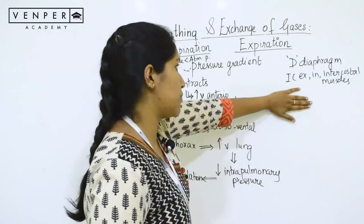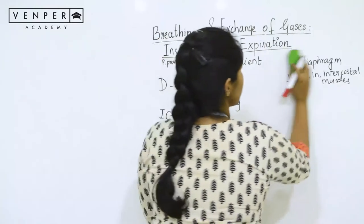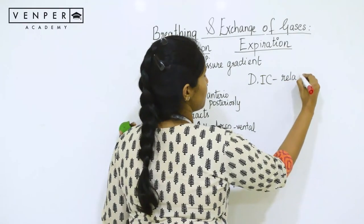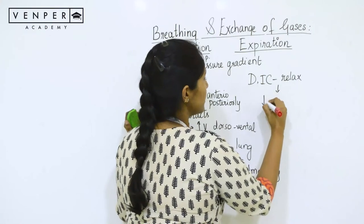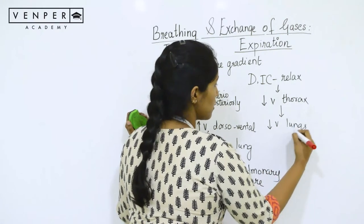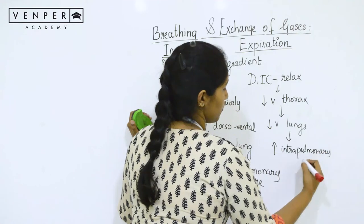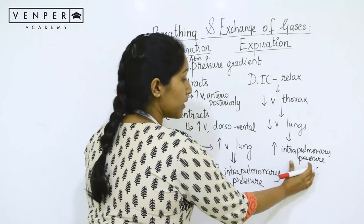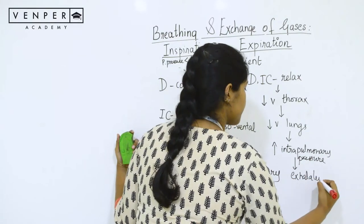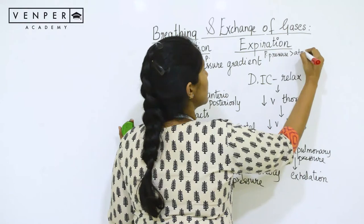During expiration, all the reverse processes take place. The diaphragm and intercostal muscles relax, causing a decrease in the volume of the thorax, which leads to a decrease in lung volume and an increase in intrapulmonary pressure. This increase in intrapulmonary pressure compared to the atmospheric pressure leads to exhalation. For exhalation, pulmonary pressure is greater than atmospheric pressure.